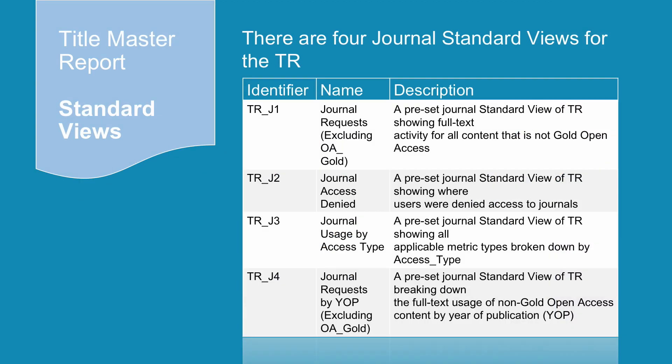The following four standard view reports are used to evaluate usage of journals. TRJ1 is a standard view showing full-text activity for all content that is not gold open access — essentially equivalent to Counter Release 4 JR1 with the JR1 GOA totals removed. TRJ2 shows where users were denied access to journals because simultaneous use licenses were exceeded or their institution did not have a license. TRJ3 shows all applicable metric types broken down by access type. TRJ4 is journal requests by year of publication excluding gold open access, which you can filter by title to view usage by year of publication.